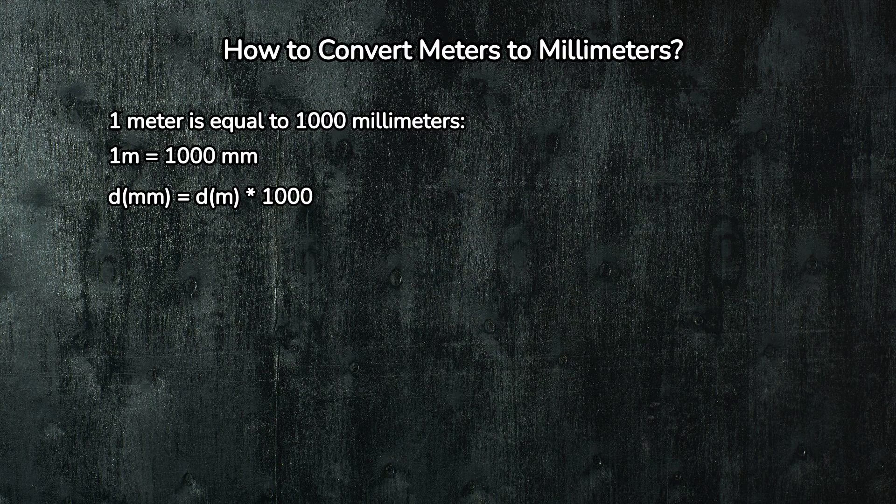Practical tip: when multiplying by 1,000, simply add three zeros to the end of the number or move the decimal point three digits to the right.